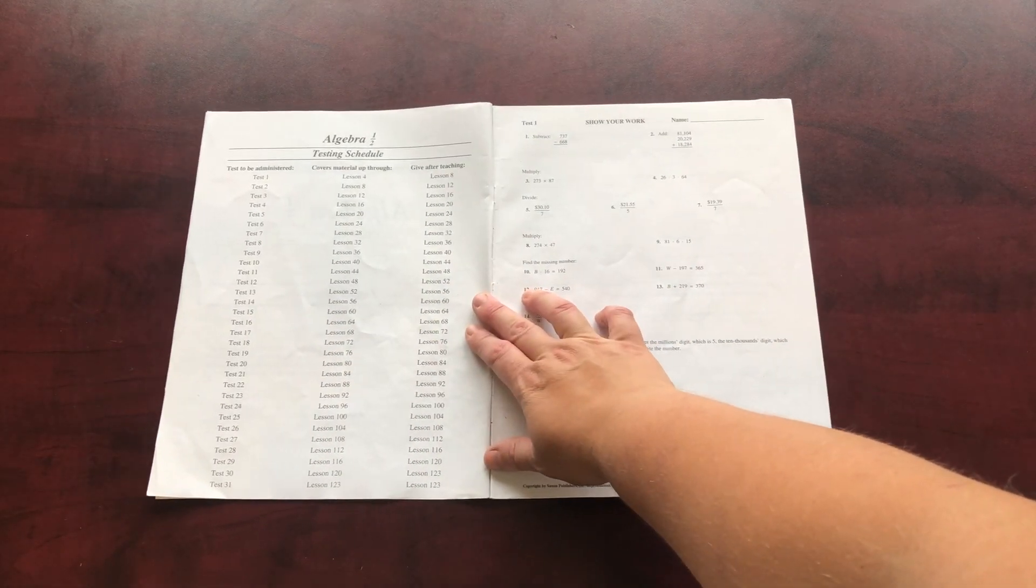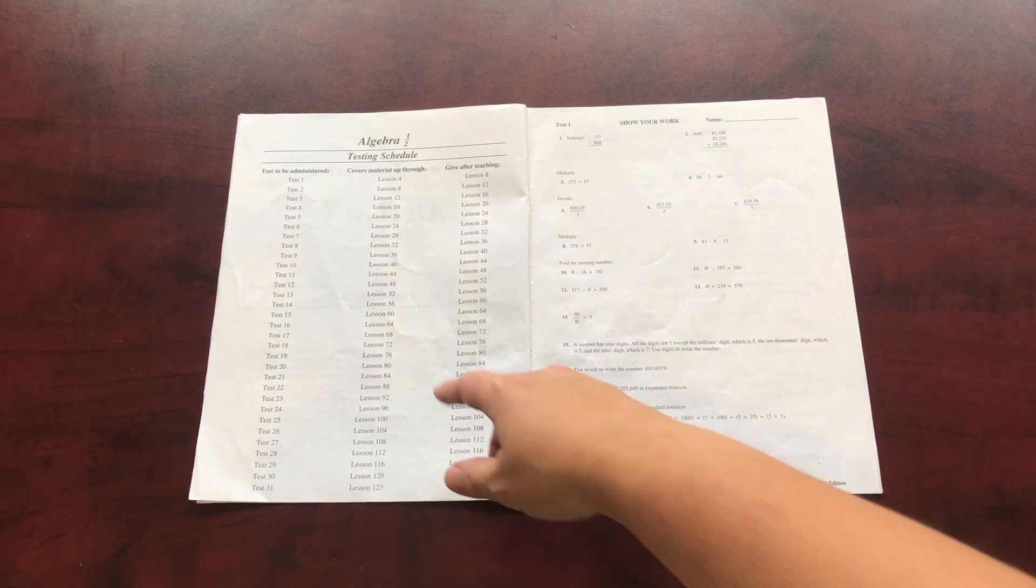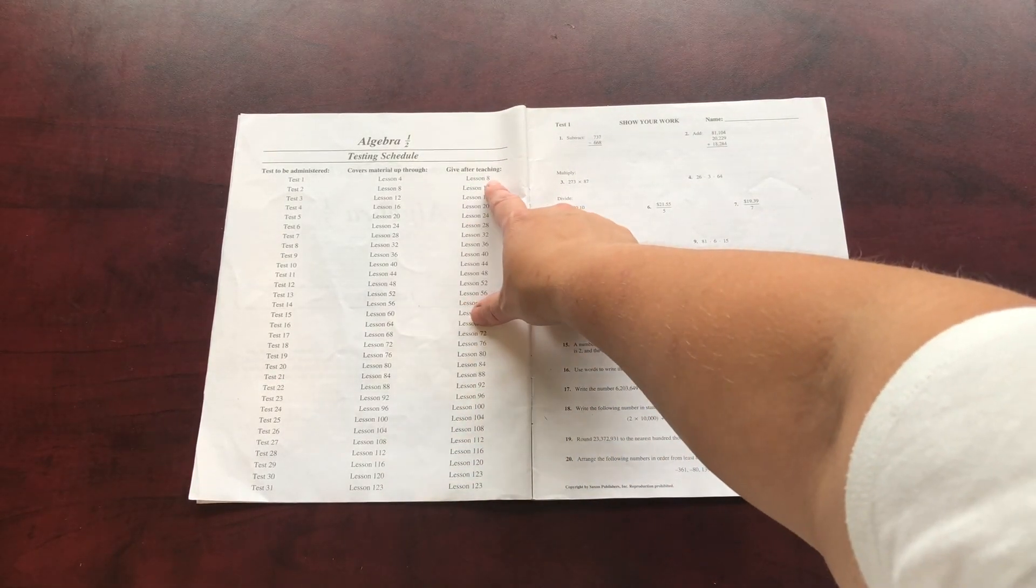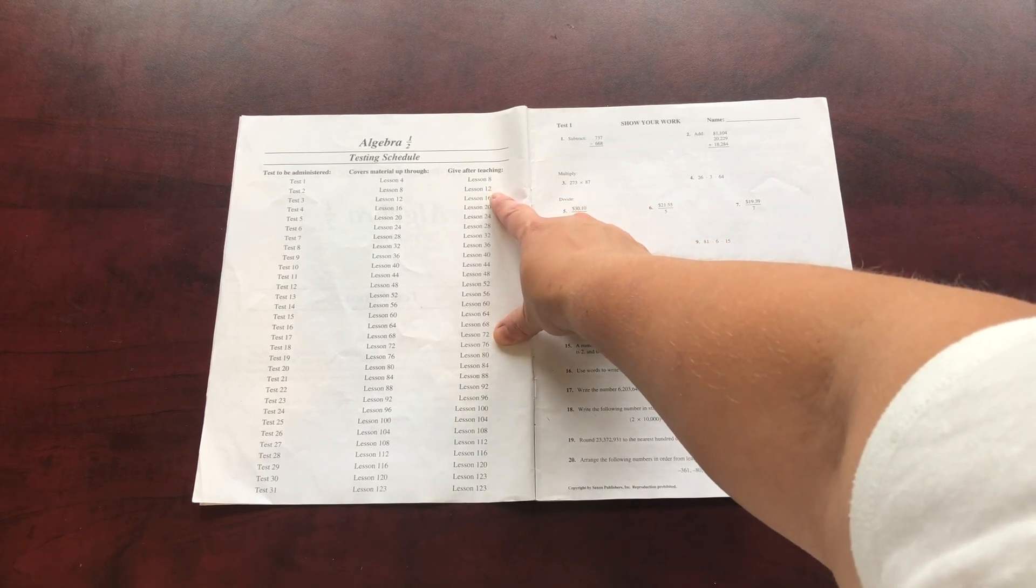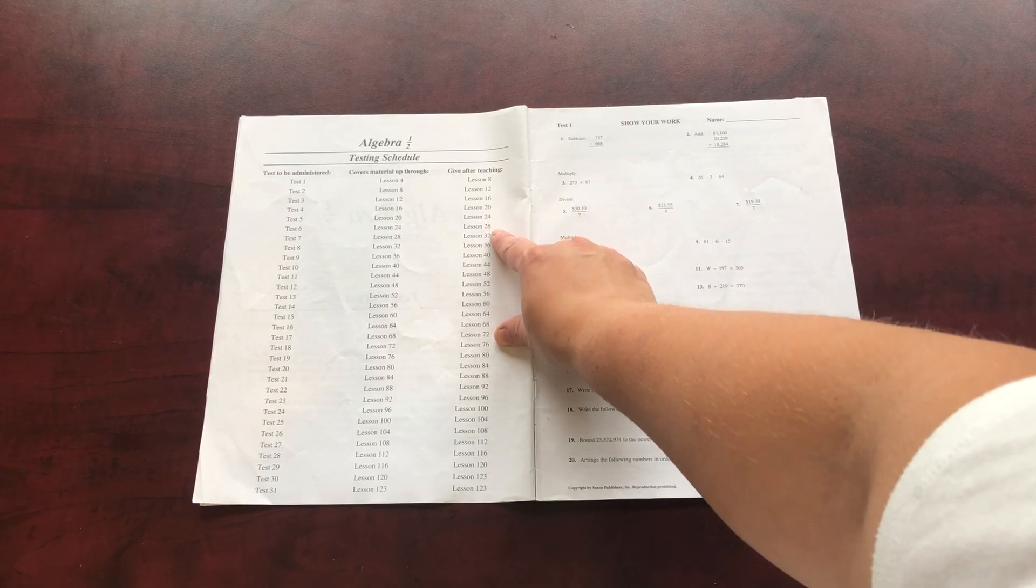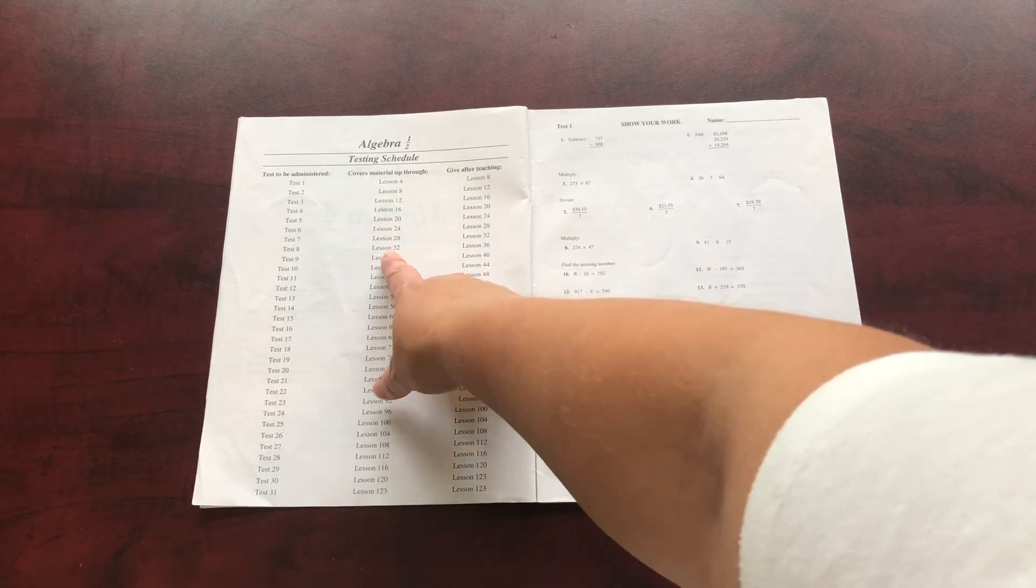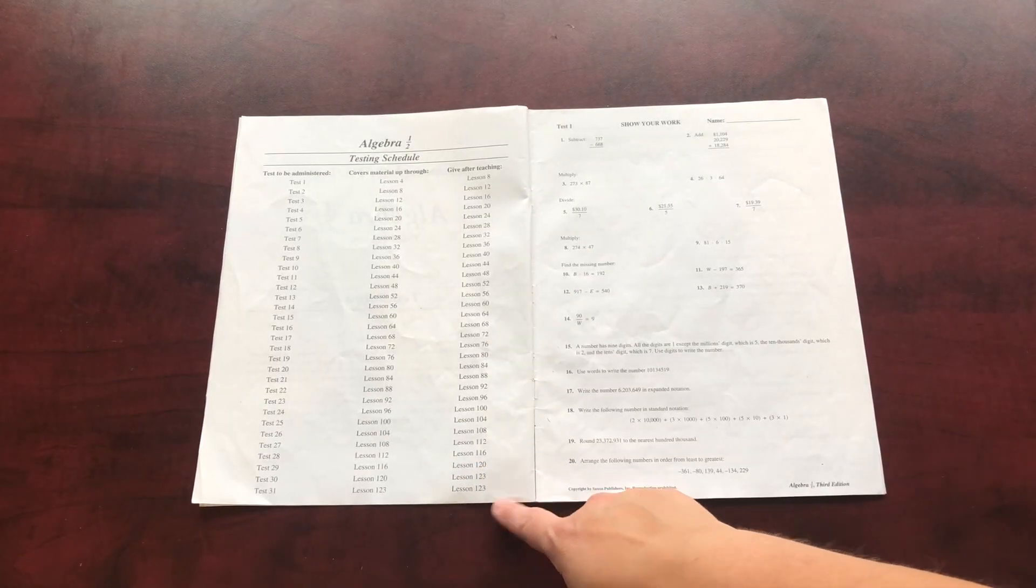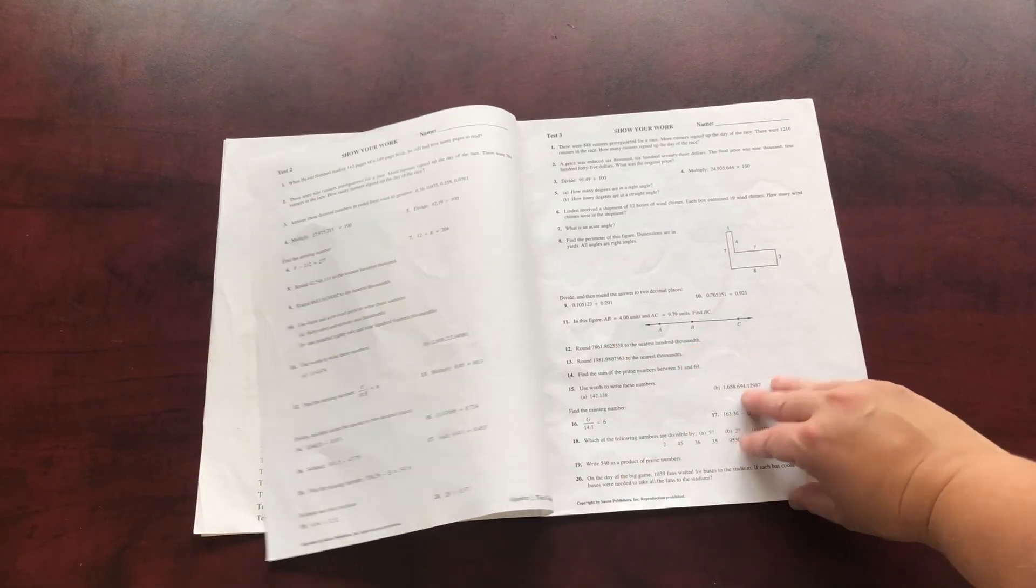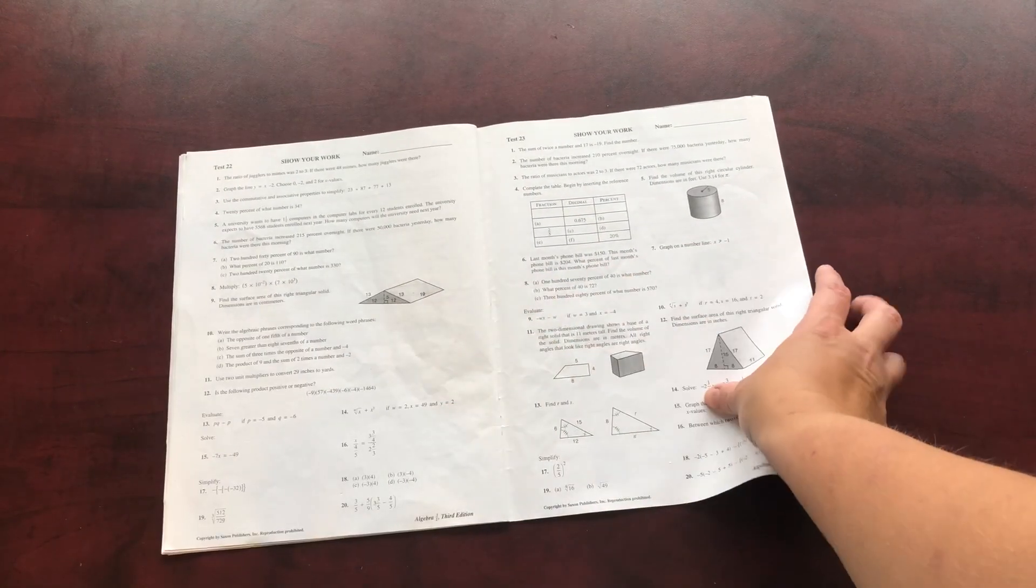This is the testing schedule. So it's a little bit different than the lower level for this one. You're going to be doing tests. So the first one is after lesson eight, and then it's every four lessons, which is quite different. And it tests based on up to four lessons previous. It's pretty interesting. So there's 31 tests altogether for 123 lessons. These are what the tests look like. And that's what that level looks like.